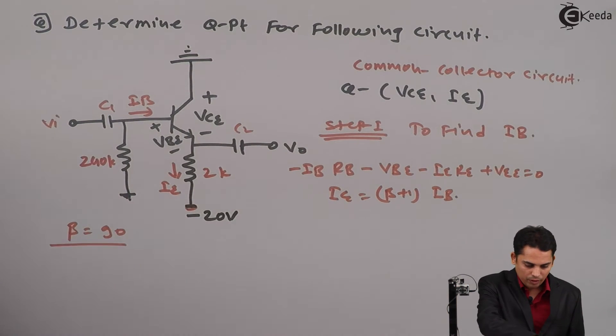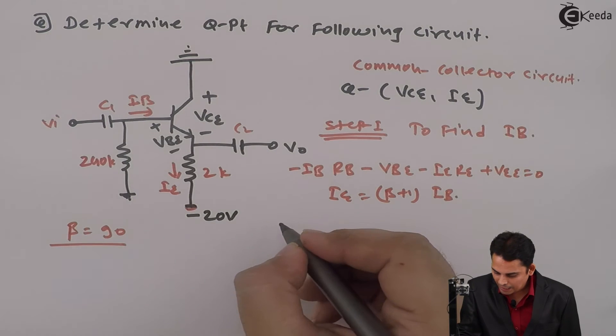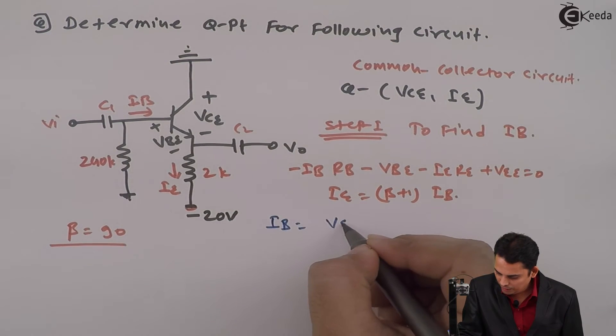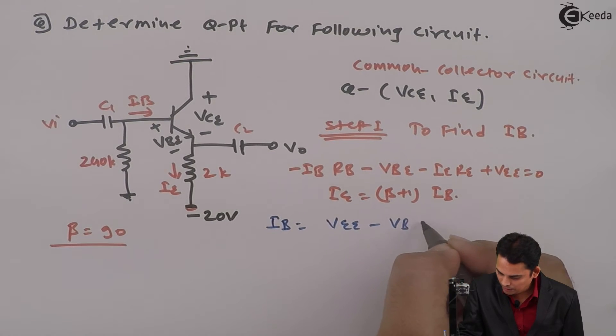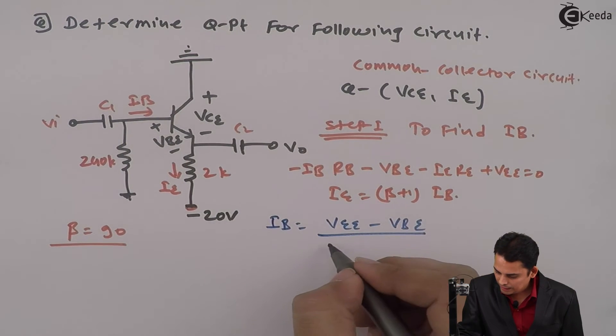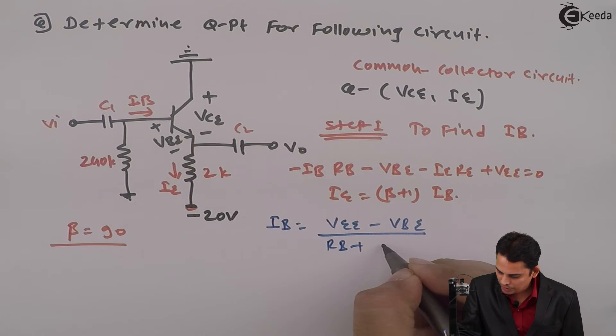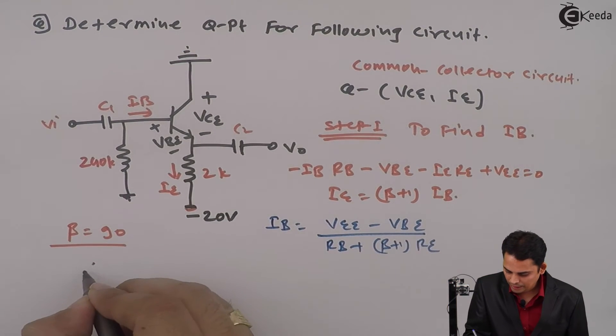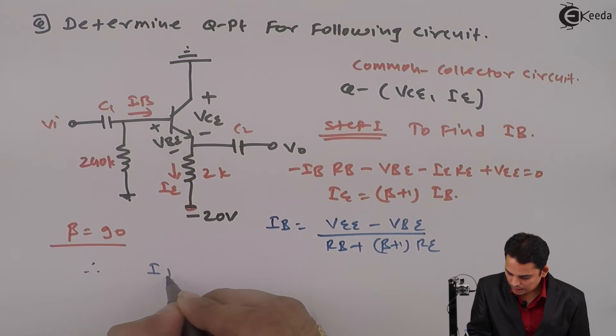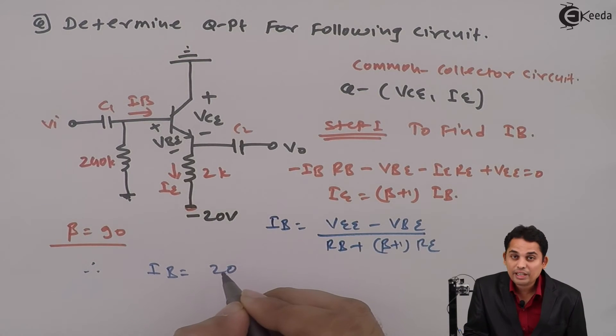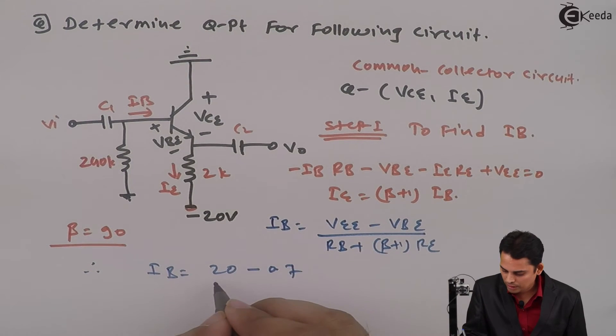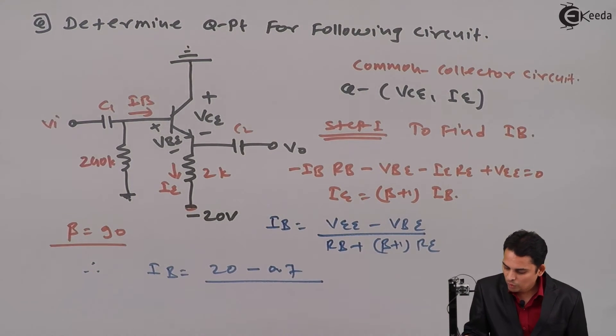If we solve this equation we will get that IB is equal to VEE minus VBE divided by RB plus beta plus 1 times of RE. RE is equal to 2 kilo.